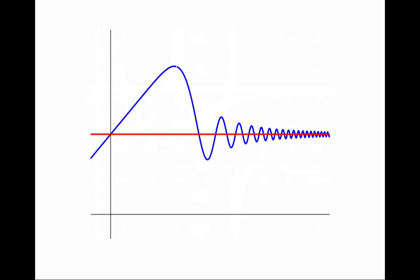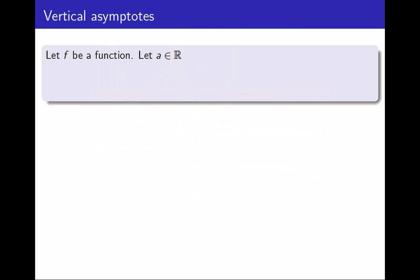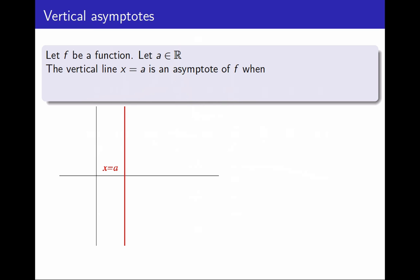So we know what asymptotes are. Now let's go through the three types one by one to figure out how to calculate them. Let's begin with vertical asymptotes. I have a function f, and a vertical asymptote will have equation x equals a constant — let's call that constant a, like this red line here. I want to know what it means for the vertical line x equals a to be an asymptote for f.